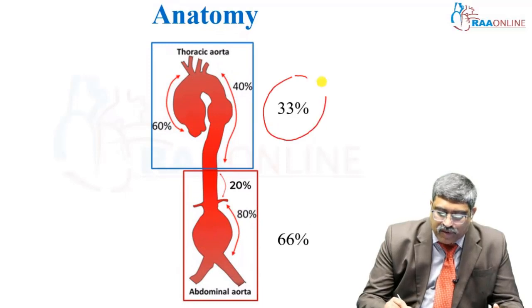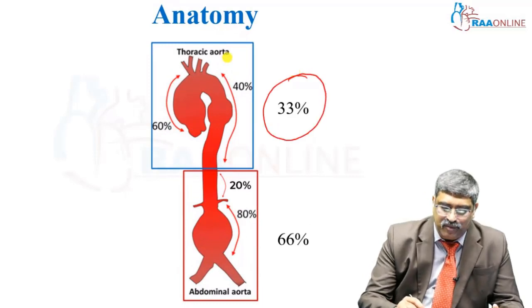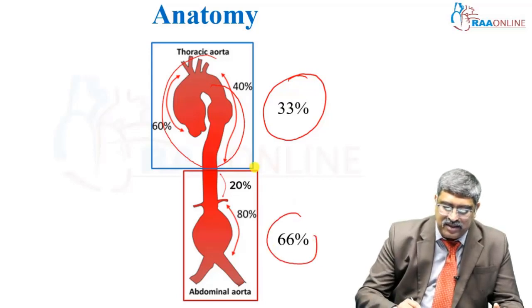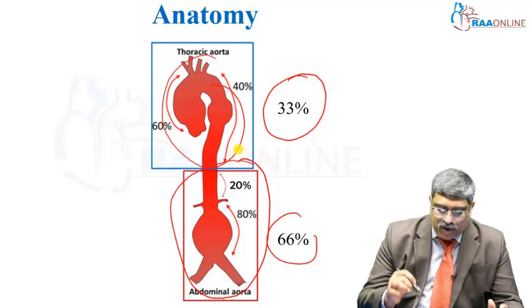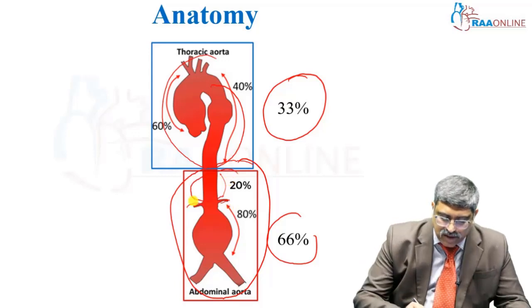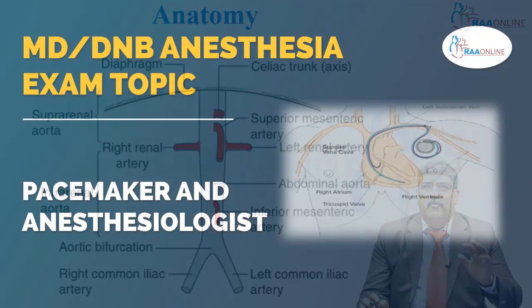About one third of aneurysms arise from the thoracic aorta and two thirds arise from the abdominal aorta. Of the abdominal aorta, 20% is suprarenal and 80% is infrarenal.